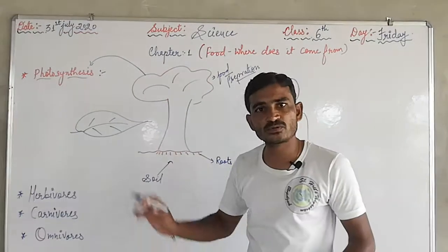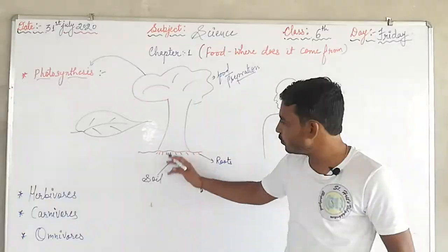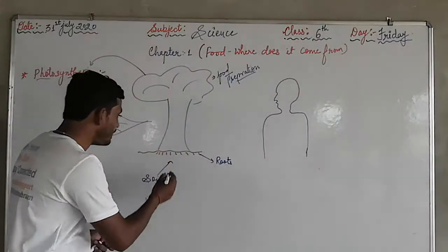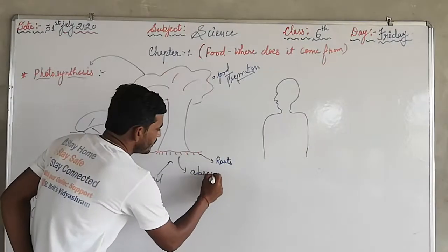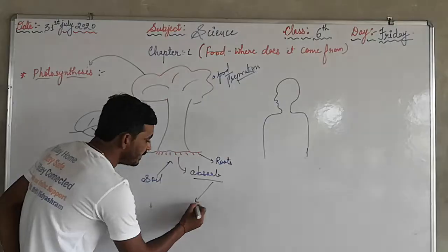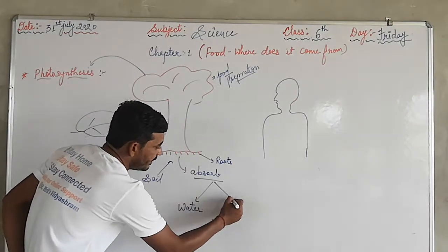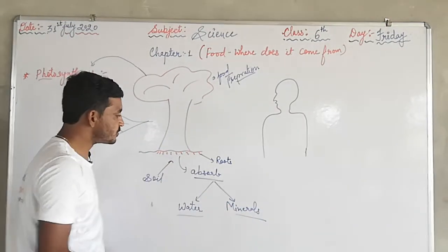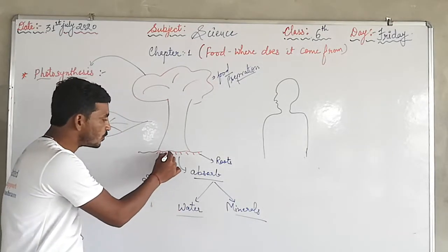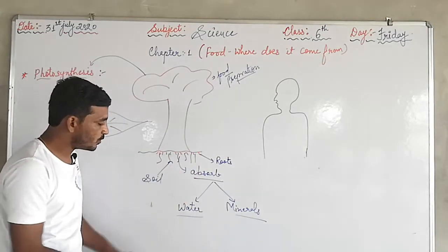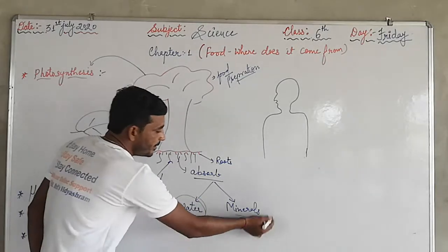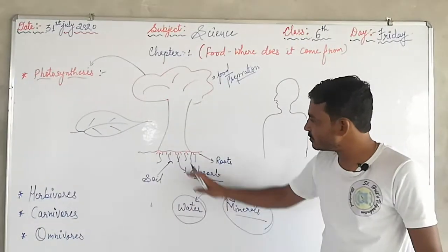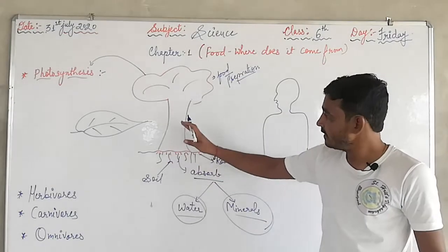So let's talk about the photosynthesis process. In the roots of plants, what will be absorbed? Water and minerals present in the soil — through the roots, the plant absorbs water and minerals. So from the roots, the plant will get water and minerals.